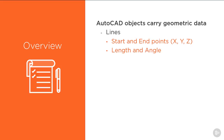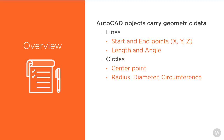Lines also have a length and an angle. Circles have a center point, as well as a radius and diameter. Circumference and area are automatically calculated for you. Polylines have a whole set of vertex data, as well as length and area properties. And the list of extractable geometric data goes on.